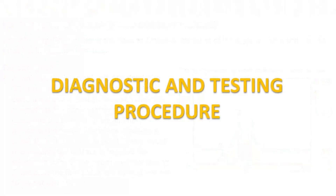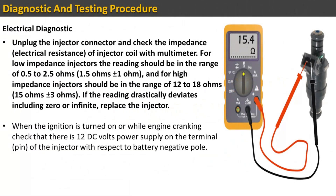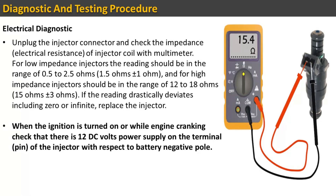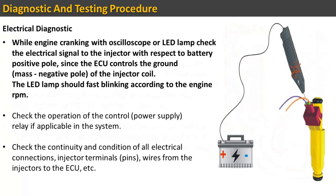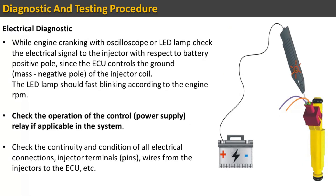Electrical diagnostics: Unplug the injector connector and check the impedance of the injector coil with a multimeter. For low impedance injectors the reading should be in the range of 0.5 to 2.5 ohms, and for high impedance injectors it should be in the range of 12 to 18 ohms. If the reading drastically deviates, including zero or infinite, replace the injector. When the ignition is turned on or while engine cranking, check that there is 12V DC power supply on the terminal of the injector with respect to battery negative. While engine cranking, use an oscilloscope or LED lamp to check the electrical signal to the injector with respect to battery positive. Since the ECU controls the ground of the injector coil, the LED lamp should blink rapidly according to the engine RPM. Check the operation of the control relay if applicable in the system.